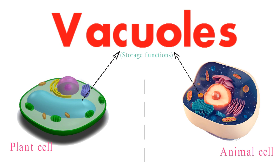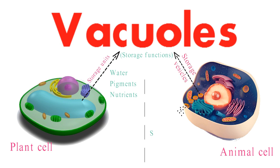While plant vacuoles take on the role of spacious storage units, housing water, pigments, and nutrients, animal cell storage vesicles serve to stockpile molecules for eventual release.